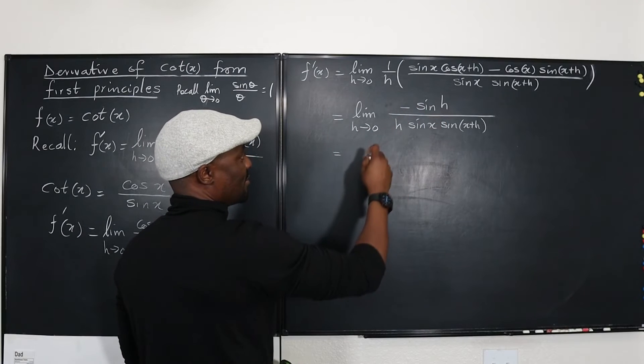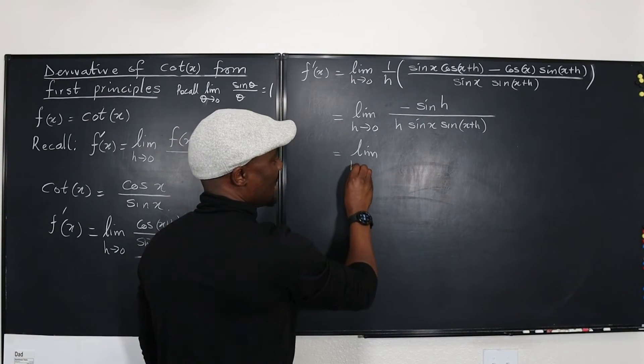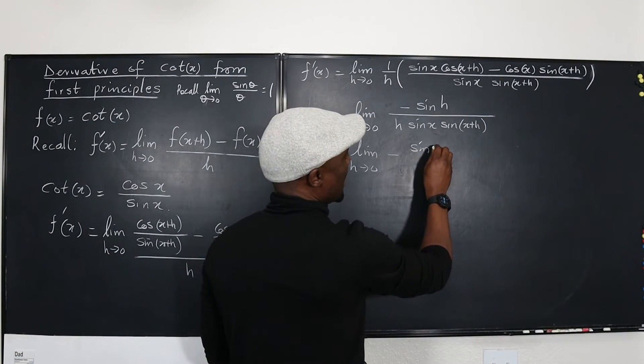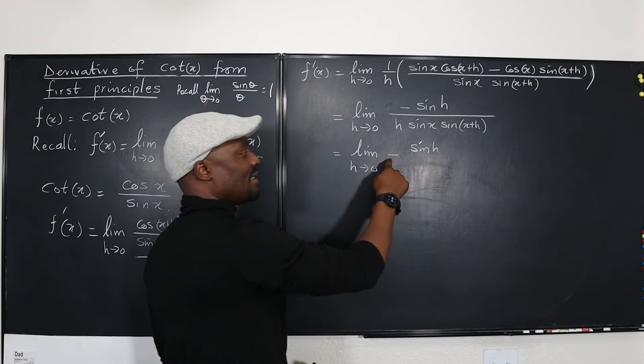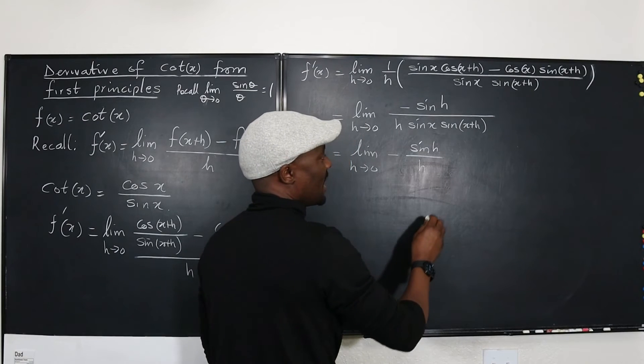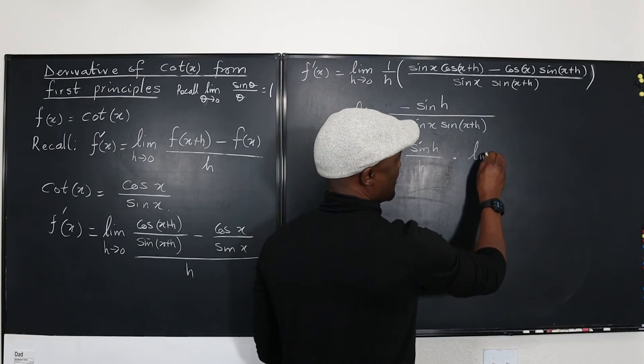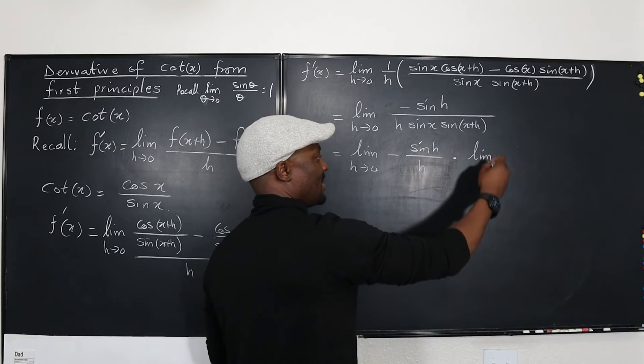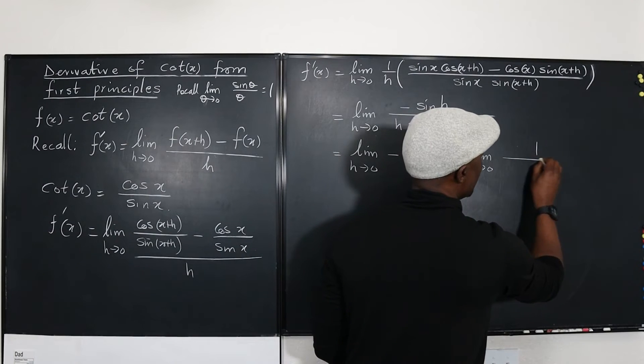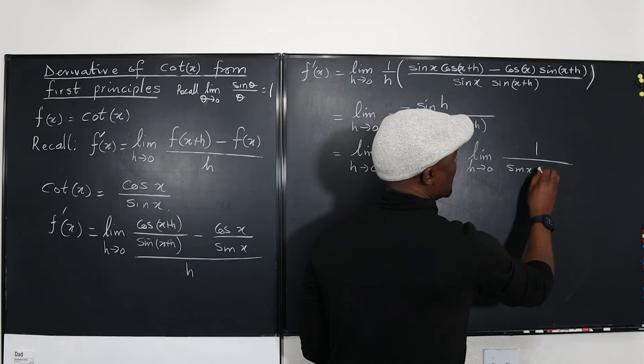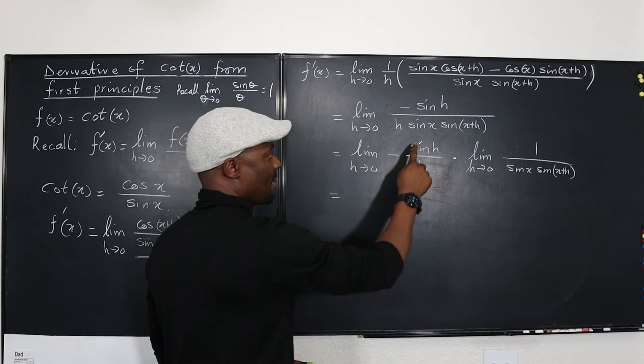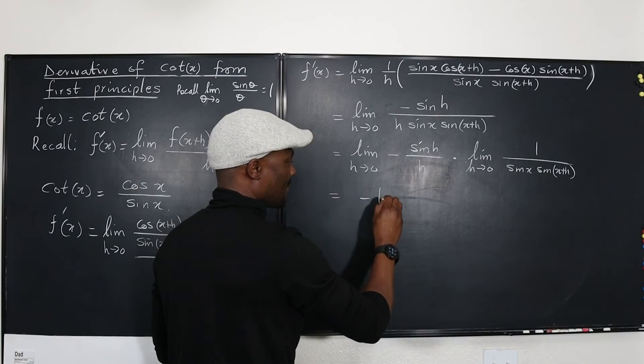If you have this expression, it's going to be the limit as h goes to zero of negative sine h. And this negative is not relevant. You can move it to the back. Over h, times. You can take another limit because this is a continuous function and this expression is continuous. Limit as h goes to zero of one over, this is going to be sine x times sine x plus h. If I take this limit, it's going to be negative one. This is going to be one.